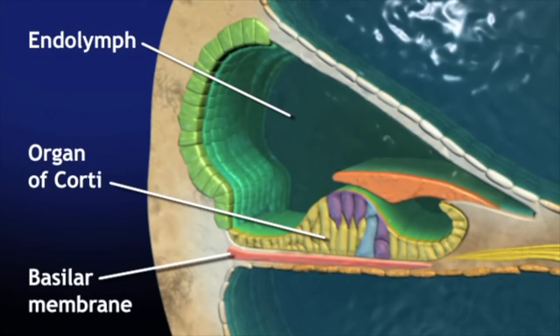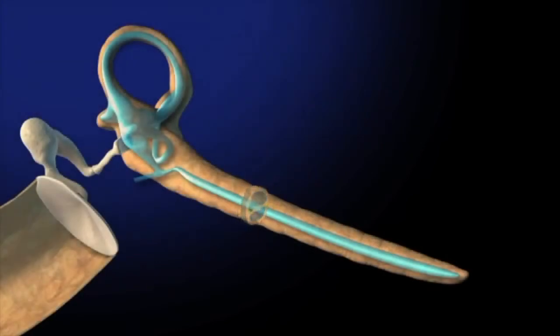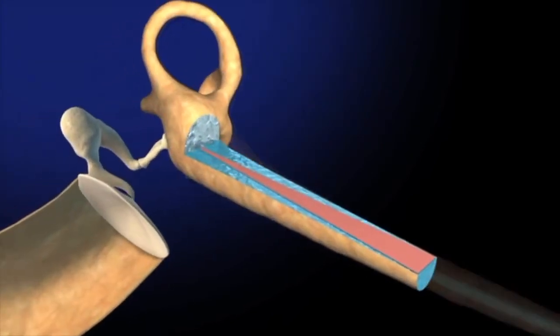Movement of the basilar membrane stimulates the auditory receptors. Notice two structural properties that determine the way the basilar membrane responds to sound.